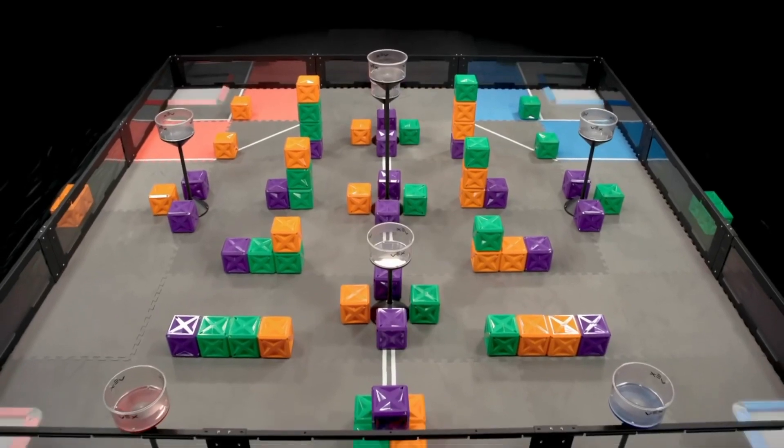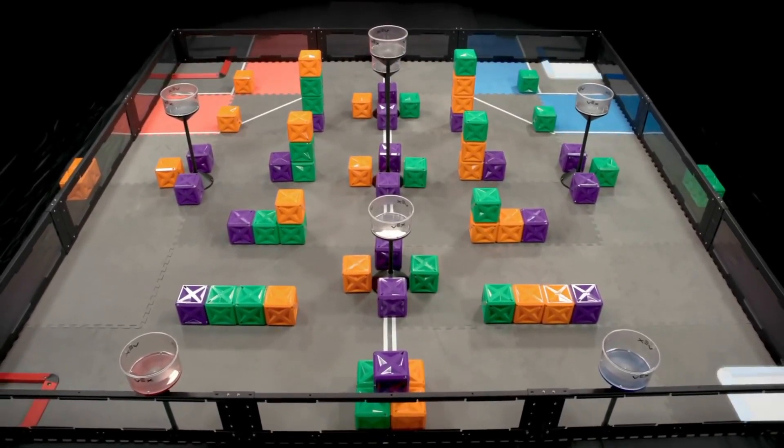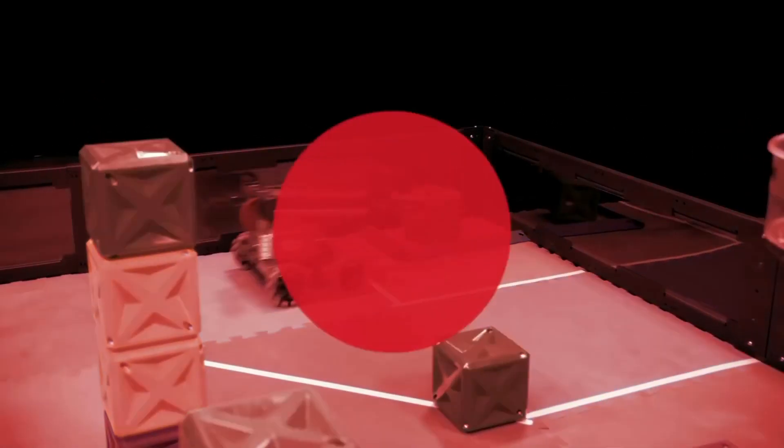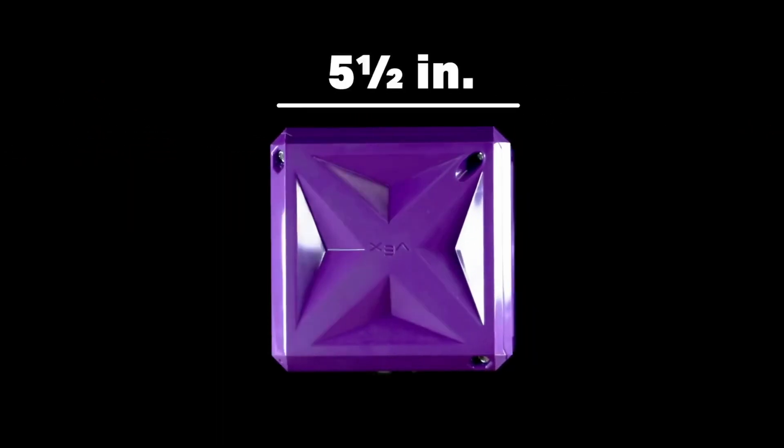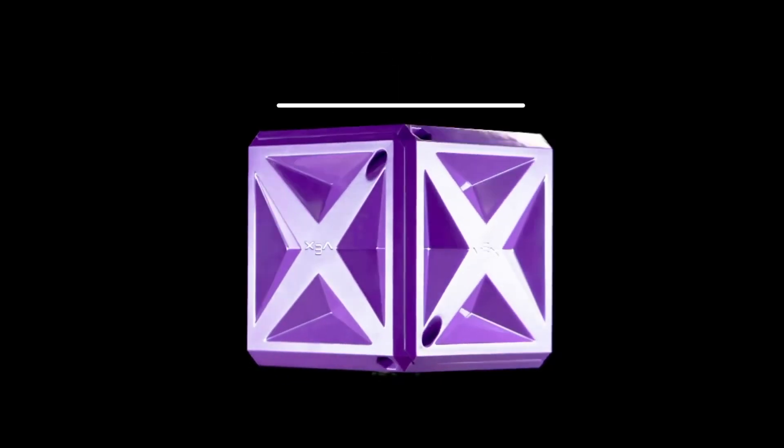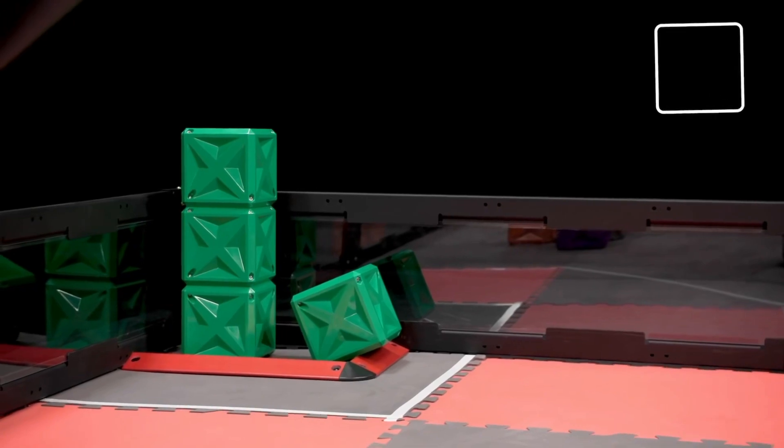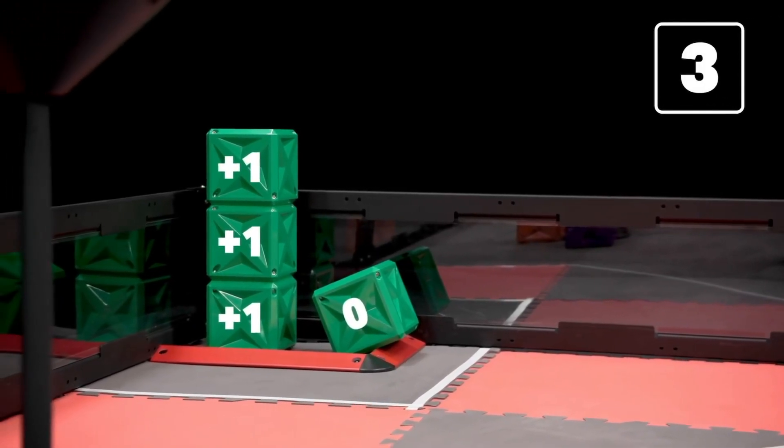There are also four goal zones, two per alliance, in the corners of the field. Goal zones may only be utilized by robots from that alliance. Cubes are 5.5 inches across, or 139.7 millimeters, and are worth at least one point when scored in a goal zone.